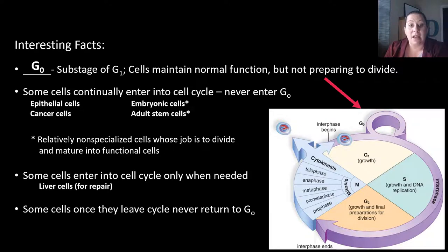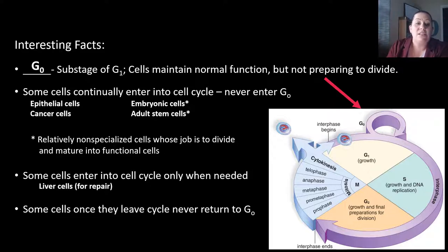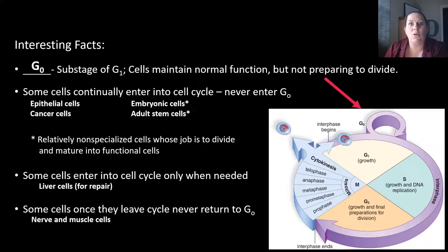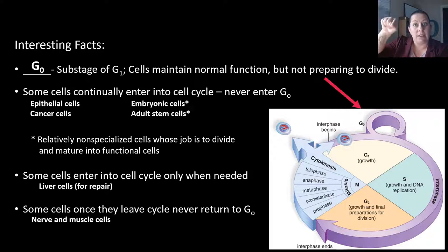On the other hand, some cells, once they leave this dividing cell cycle and go into the G0 phase, can never come back into the cell cycle. This is true for your nerve cells and your muscle cells. This is why brain damage — cells being damaged — is so severe and detrimental: they can't be replaced. They can't repair themselves or replace those cells. It doesn't mean the activity those cells did is lost forever, because sometimes the brain can route around the damage, but it does take time.